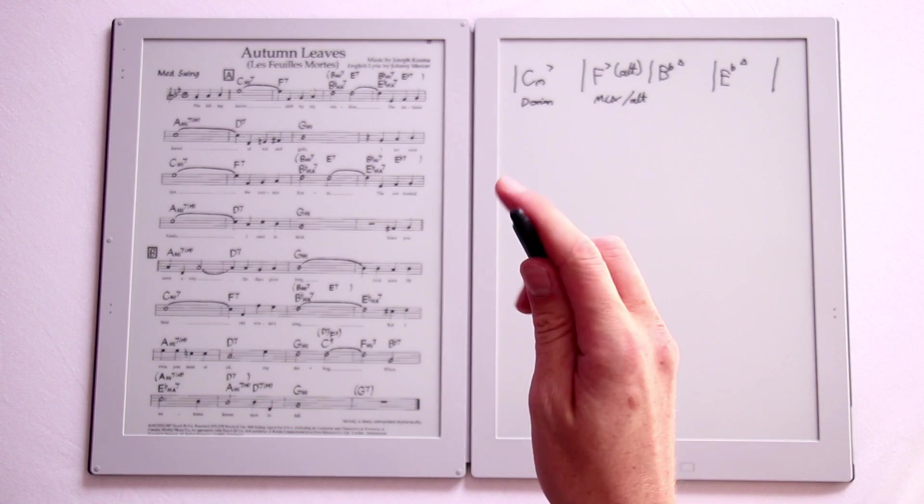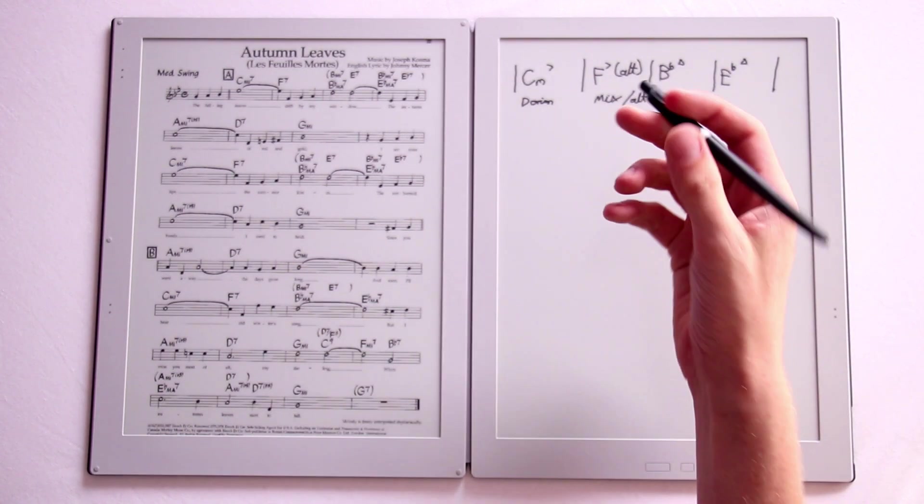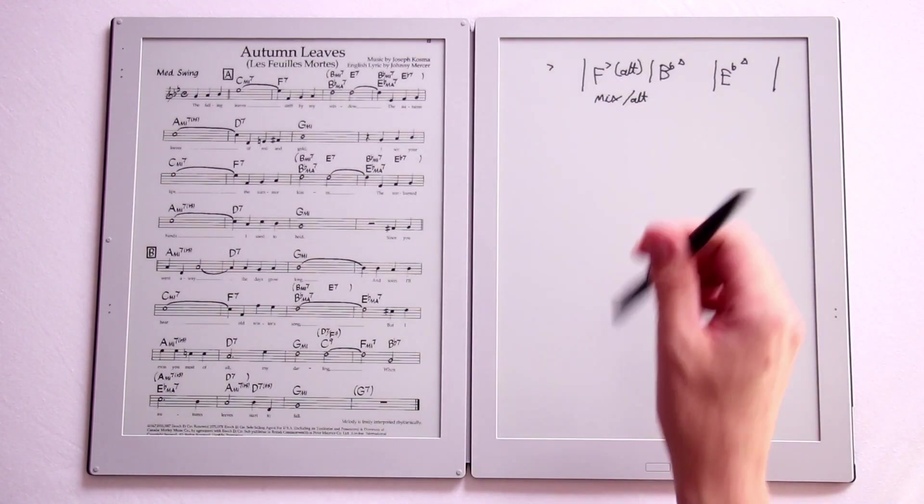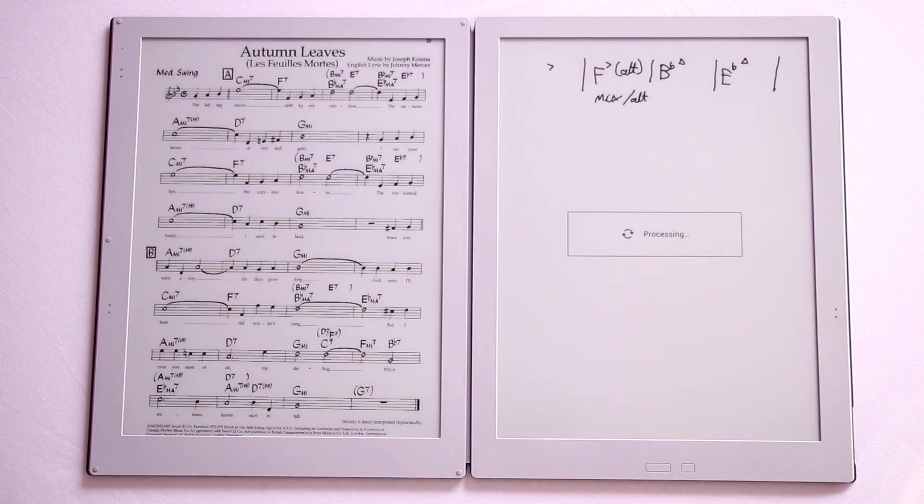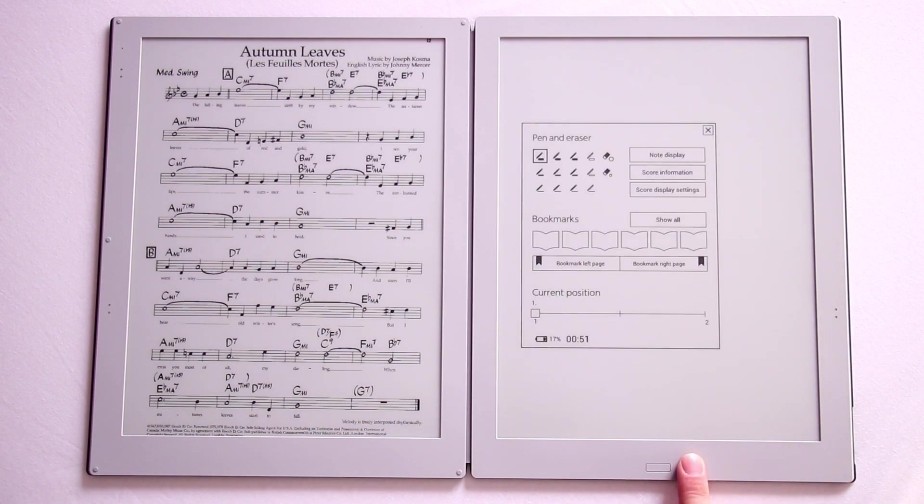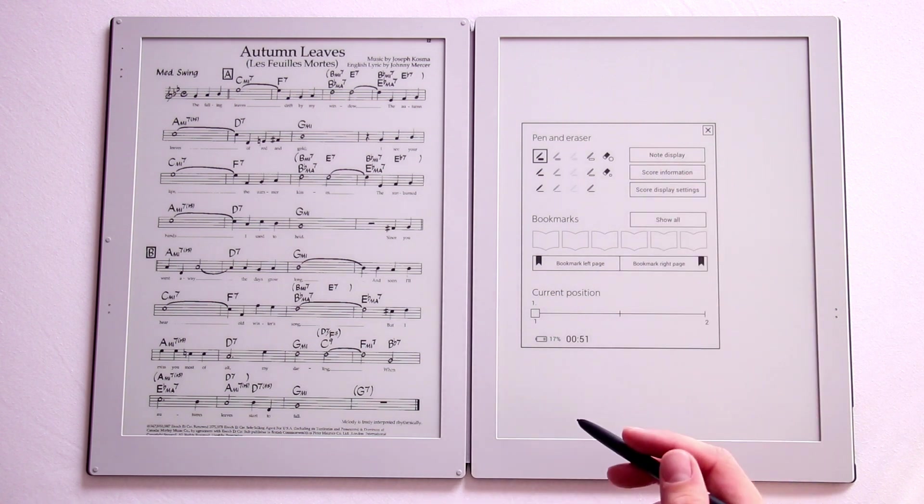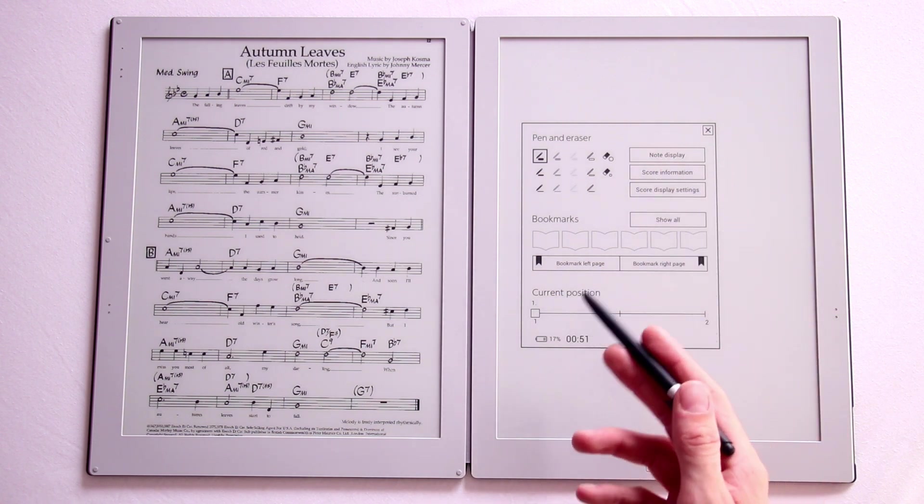Another thing you can do here is use the rubber on the pen as I mentioned earlier and you can just rub stuff out which is pretty cool. You can also go into here and choose all sorts of options with the pen and note display and stuff.